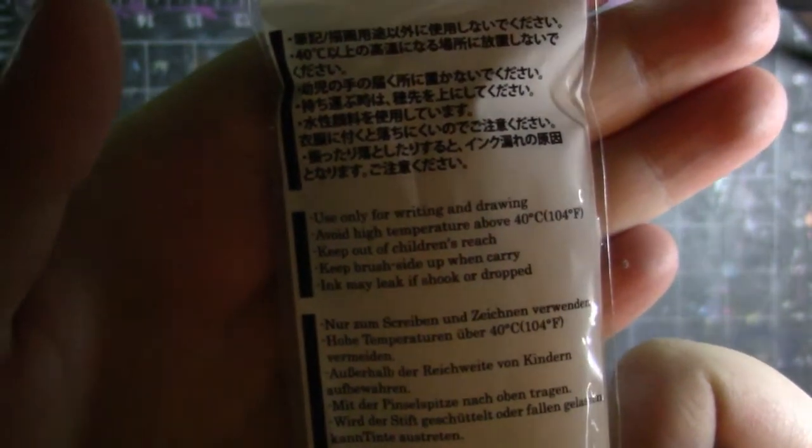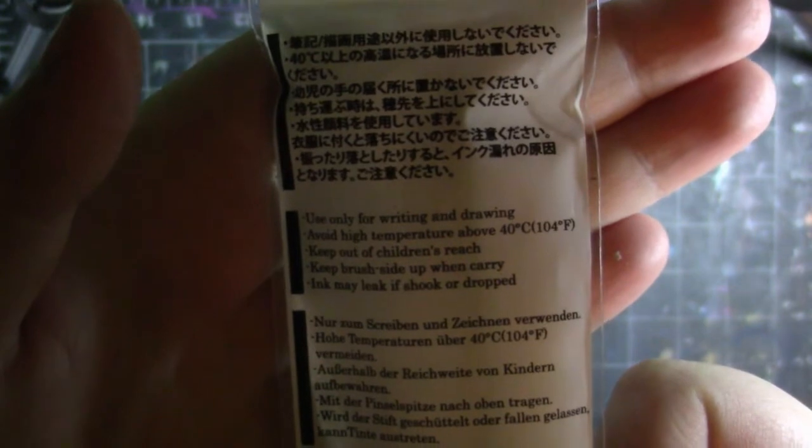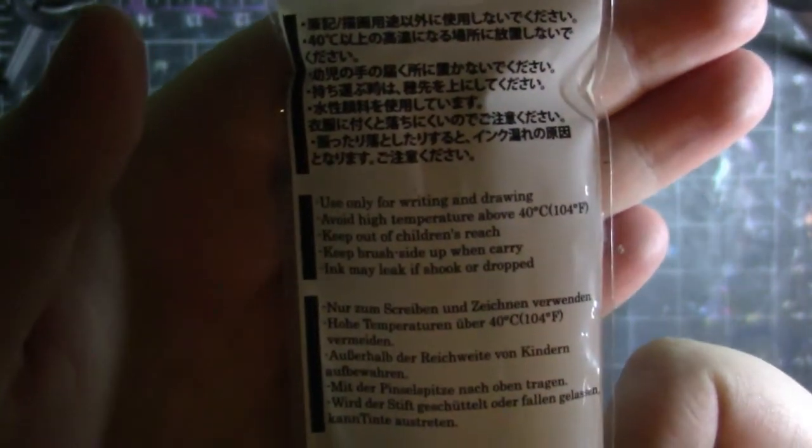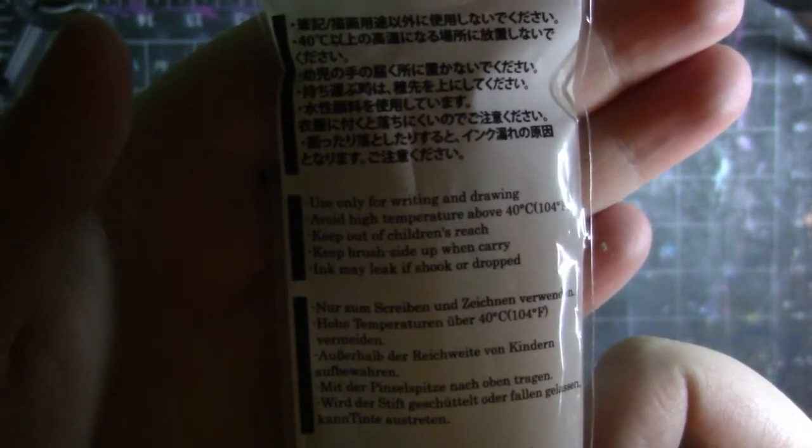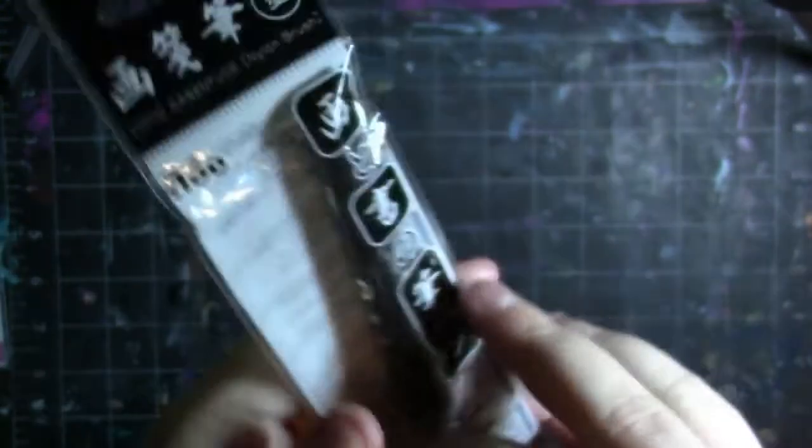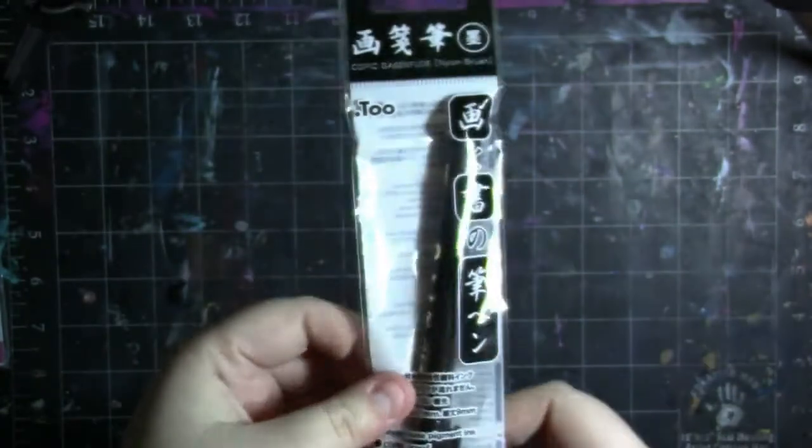And there is some English down here. It says it is water-based pigment ink, Copic proof, genuine nylon brush, brush diameter is 3.1 millimeters and length is 9 millimeters. It is made in Japan. And then here it says, use only for writing and drawing. Avoid high temperature above 40 degrees Celsius or 104 Fahrenheit. Keep out of children's reach. Keep brush side up when carrying. Ink may leak if shook or dropped.